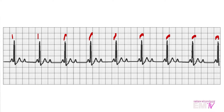So I have 9 R waves there, which means the heart rate is roughly 90 BPM. Next thing I'll do is I'll examine the QRS complex. These QRS complexes are very, very narrow, meaning that this rhythm is likely originating from above the ventricle. The presence of a P wave further confirms this.